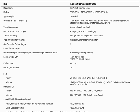The manufacturer is GE Aircraft Engines. Models include the T700-GE-701, T700-GE-701 Charlie, and T700-GE-701 Delta. The type of engine is a turboshaft. The type of compressor is a combined axial-centrifugal, with six compressor stages.